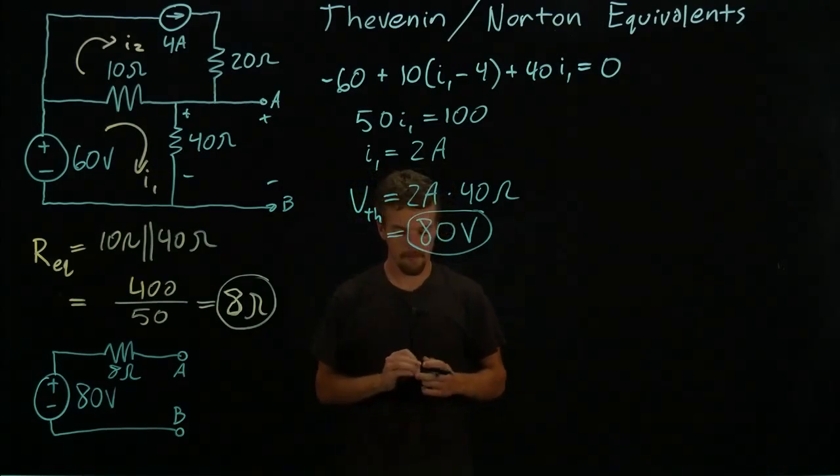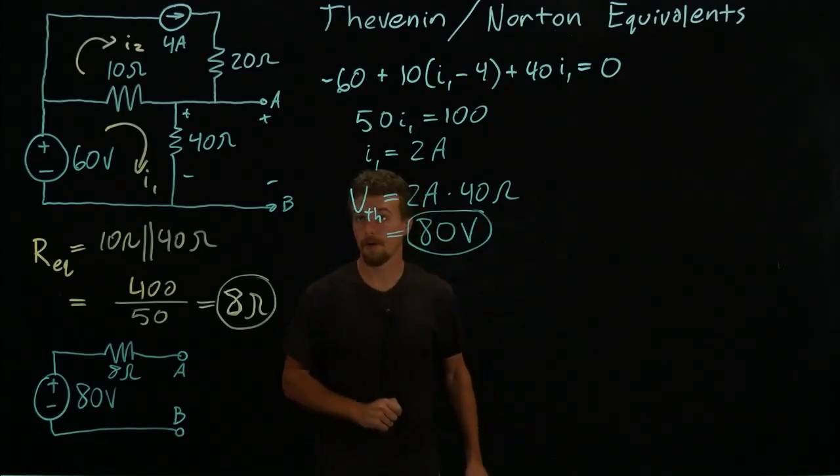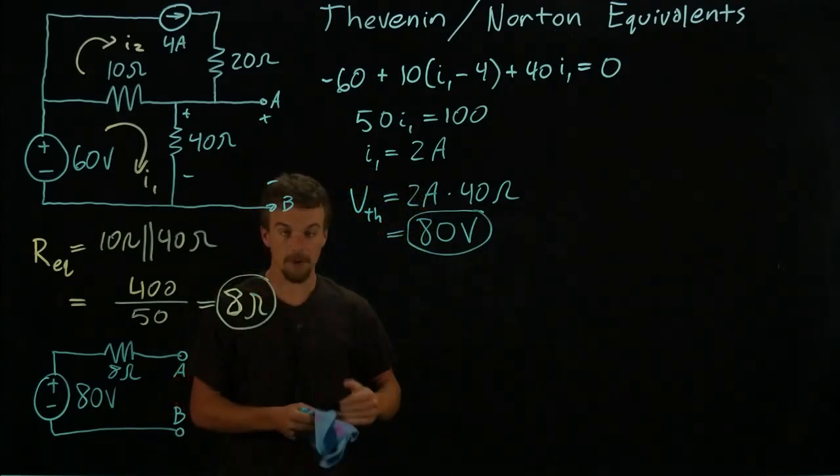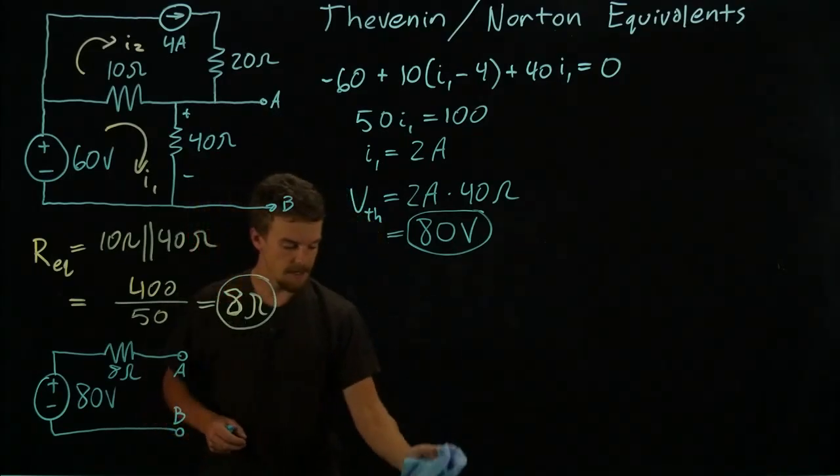All right, so now we will solve for our Norton current. Our Norton current is defined by the short circuit current between A and B as this circuit stands.